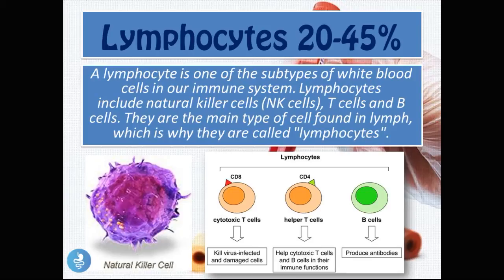Another type of white blood cell is the lymphocyte, which normally makes up 20 to 45 percent of white blood cells. Lymphocytes are subtypes of white blood cells in our immune system and include natural killer cells (NK cells), T cells, and B cells. They are the main type of cell found in lymph, which is why they are called lymphocytes.